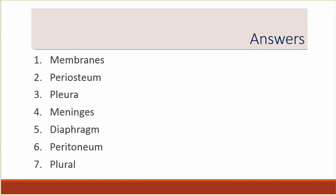Number one was membranes. Number two is periosteum. Number three, pleura. Number four, meninges. Number five, diaphragm. Number six, peritoneum. Number seven, pleural.